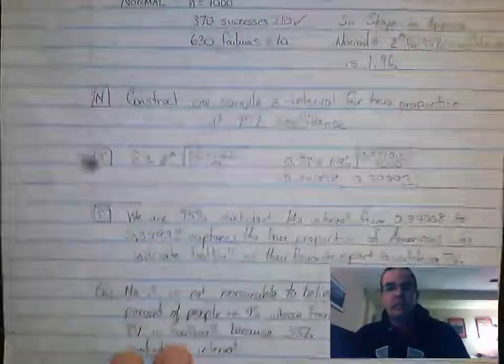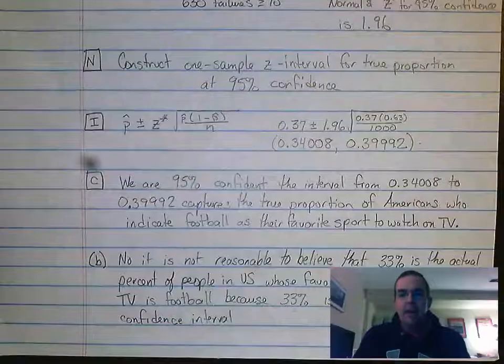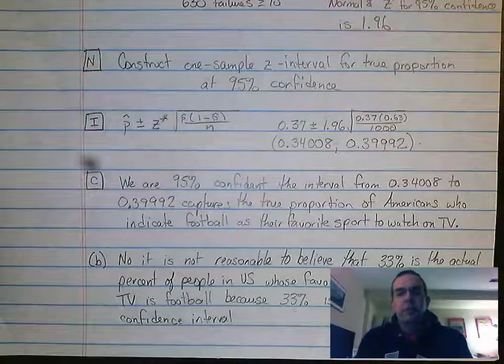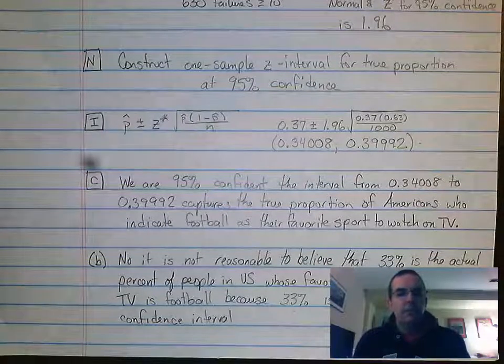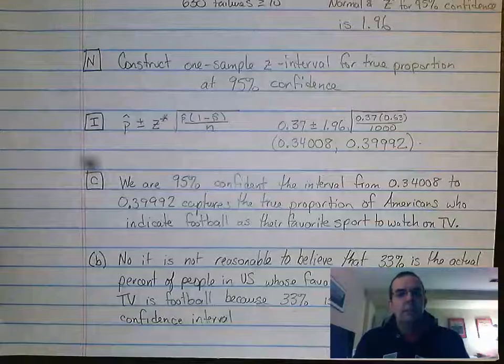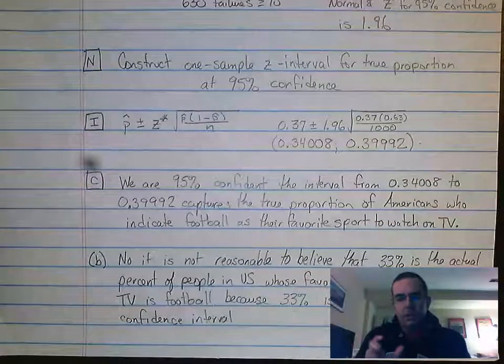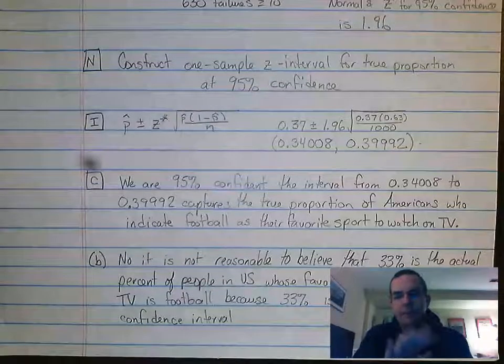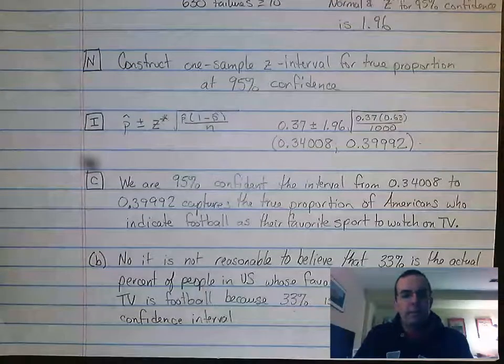And then the final piece, and this is the piece that will earn you your points. It's kind of your mad lib. We are 95% confident the interval from 0.34008 to 0.39992 captures the true proportion of Americans who indicate football as their favorite sport to watch on TV. That is almost always going to be worth a point. So please, please, please get that kind of format down. It's really going to serve you well. Thank you.